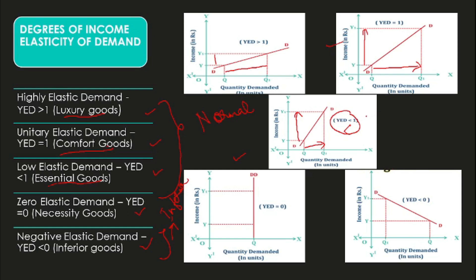These are the degrees of income elasticity and how they relate to various kinds of commodity. Income elasticity is very helpful to the manager. Once a manager knows that GNP or general income is increasing, they think consumption and quantity demanded will increase. But they must look at the kind of commodity or services their firm is selling, because a general increase in income does not automatically translate into an increase in consumption — they need to consider the nature of their specific commodities.